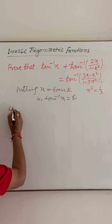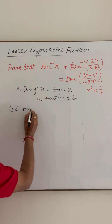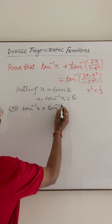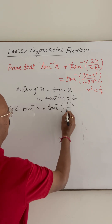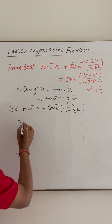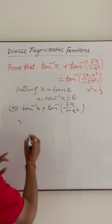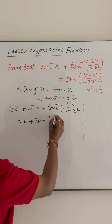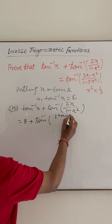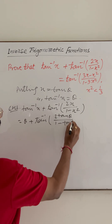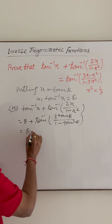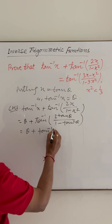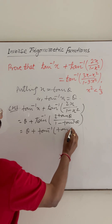The left hand side is tan inverse of x plus tan inverse of 2x upon 1 minus x square. Tan inverse x is simply theta, and 2x upon 1 minus x square becomes 2 tan theta upon 1 minus tan square theta, which is the formula for tan 2 theta. So this becomes theta plus tan inverse of tan 2 theta.